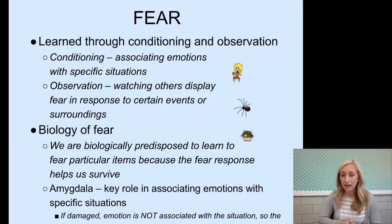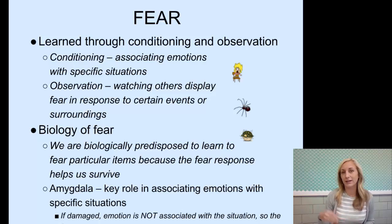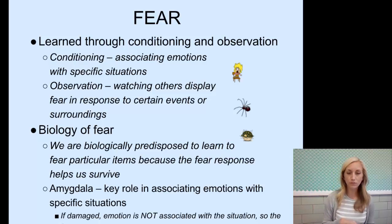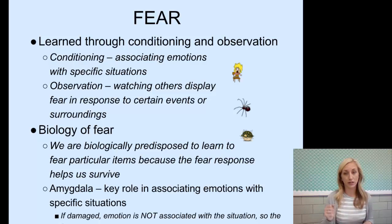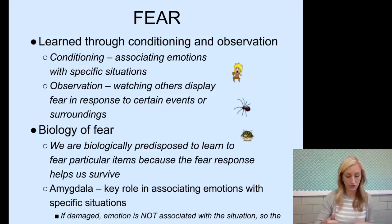The biology of fear: we're biologically predisposed to learn to fear particular items because the fear response helps us survive. For example, monkeys are predisposed to learn to fear snakes faster than other stimuli because snakes are their number one predator. The amygdala plays a key role in associating emotions with specific situations — if damaged, the emotion is not associated with the situation and the fear response is diminished.